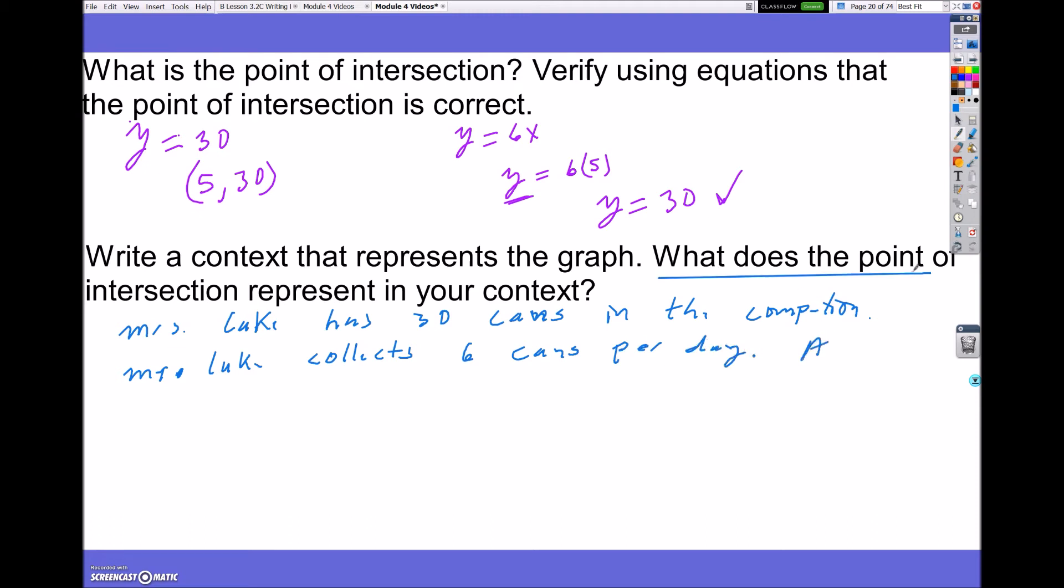Mr. Luke collects 6 cans per day. And then, it says, what does the point of intersection... So, that would be this next line. At 5 days, they both have 30 cans. So, the point of intersection is just when the two variables are equal.